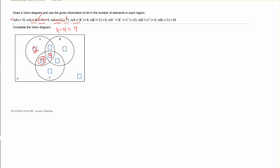Now I can go back to the first piece of information: the cardinality of A is 15. Right now I have 7 plus 4 is 11, plus 2 is 13. So this missing region in A must be 2 so that all of the regions in A add up to a cardinality of 15.